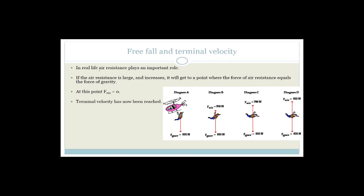In real life, there's air resistance, and you get to a point where the force upwards due to air resistance equals the force downwards due to gravity. At that point, the resultant force is zero. A lot of people will say that means the person has stopped falling — no, they haven't stopped. If the resultant force is zero, that equals mass times acceleration. The mass hasn't disappeared; what has happened is that the acceleration has become zero. And if acceleration is zero, we've reached a constant velocity.